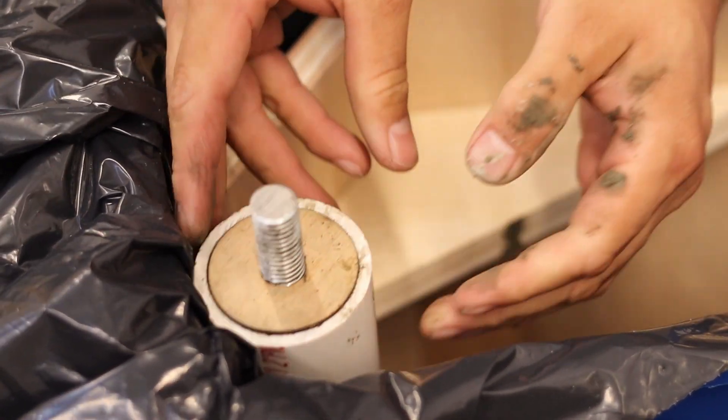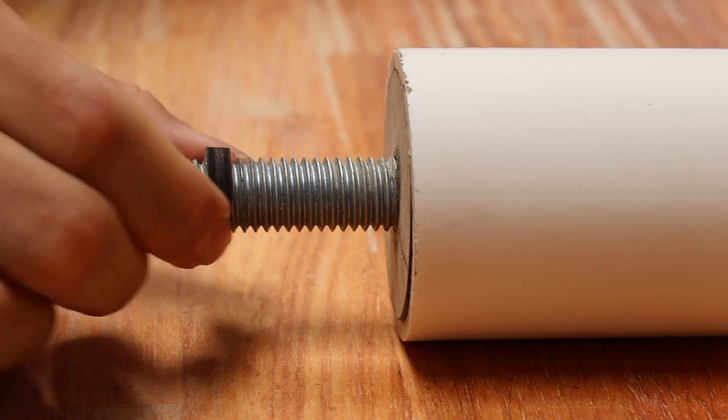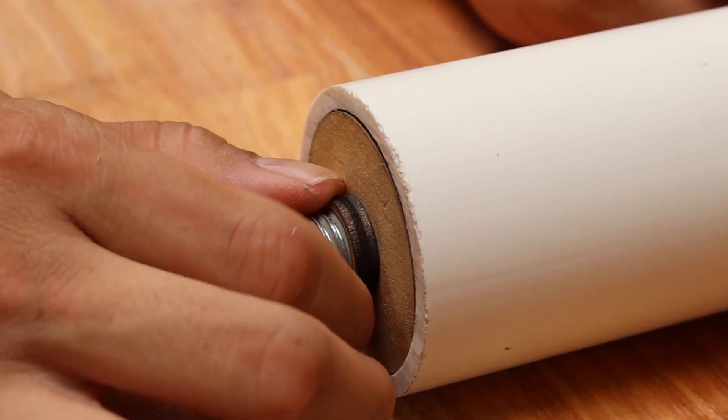Let cure for 24 hours. Insert the number 3 wooden rings to both ends of the roller.